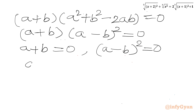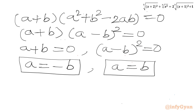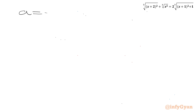From this equation I can write either a + b equal to 0, or (a - b)² equal to 0. From the first equation I get a equal to -b, and from the second equation I get a equal to b.